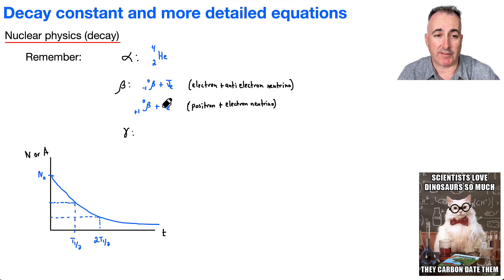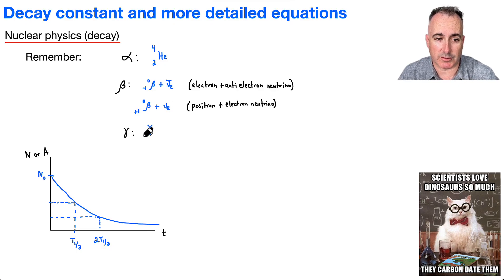And finally, we have a gamma, which we don't really do much with. We just write a little zero and a zero, because remember, it's just a photon.